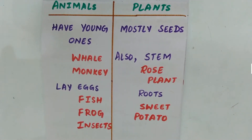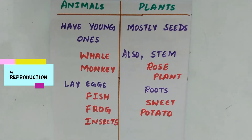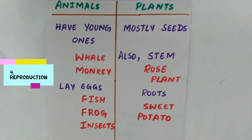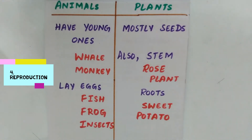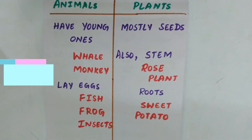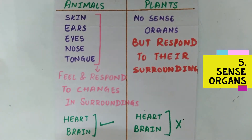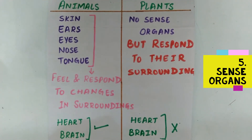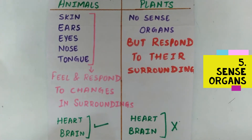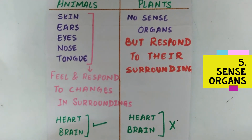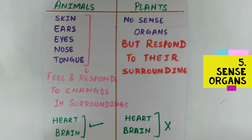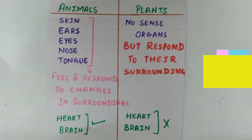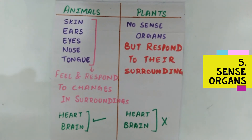Plants mostly grow from seeds, also from stems like the rose plant, and roots like sweet potato. Animals have skin, ears, eyes, nose, and tongue — they feel and respond to changes in their surroundings. Animals also have a heart and brain.